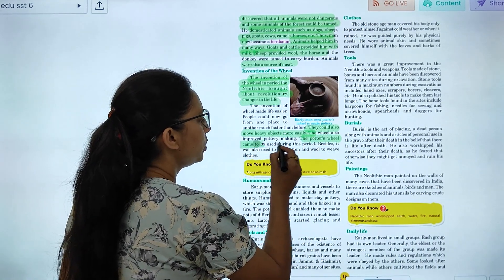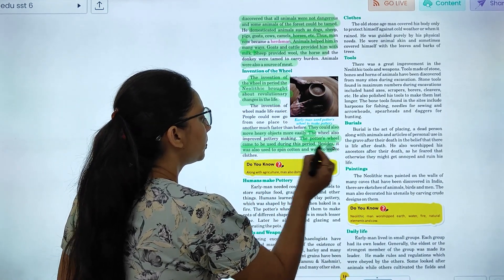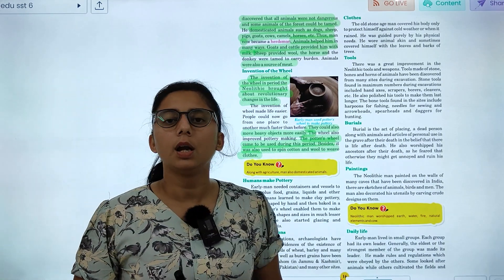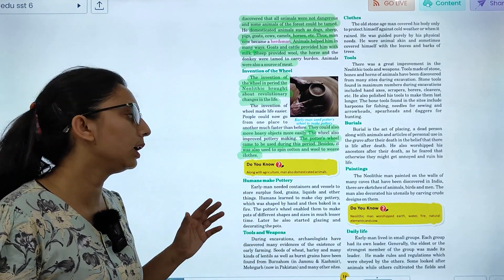The potter wheels came to be used during this period. Besides this, they could spin cotton and wool to make clothes.